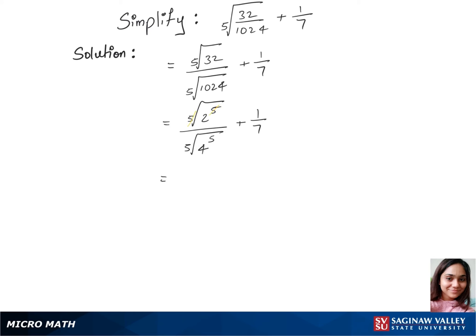So we are now left with 2 over 4 in the first part, plus 1 over 7 remains the same. Now in our next step, 2 over 4 is nothing but 1 over 2, so let's write that plus 1 over 7.